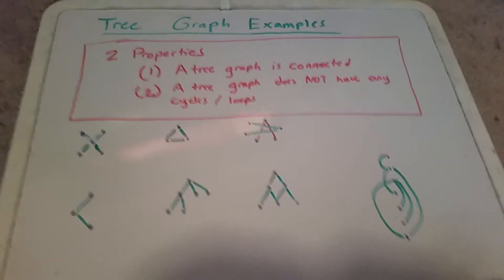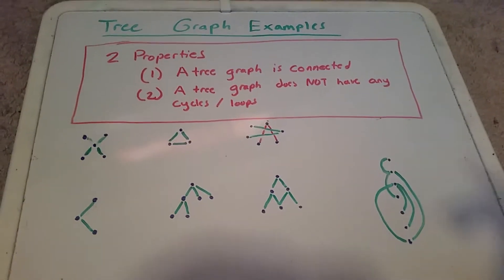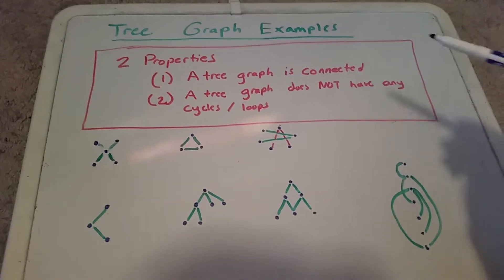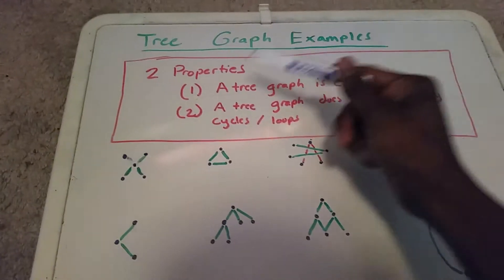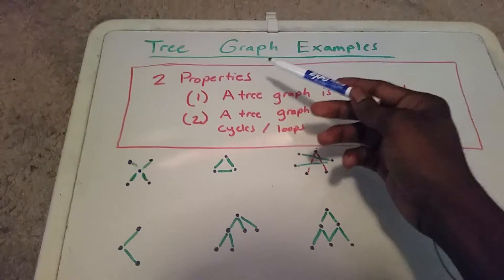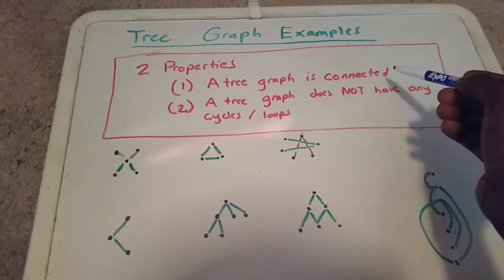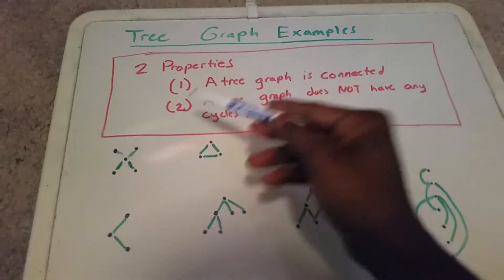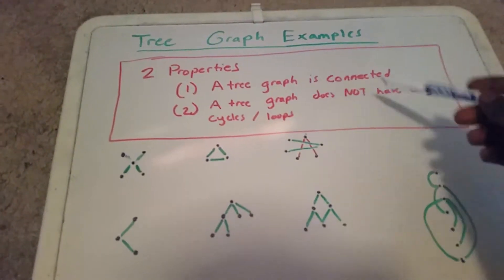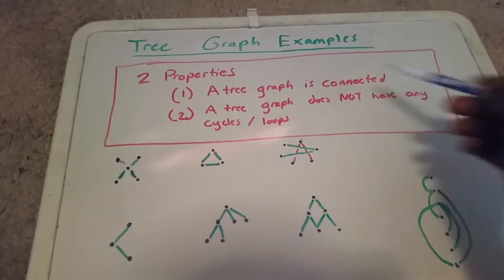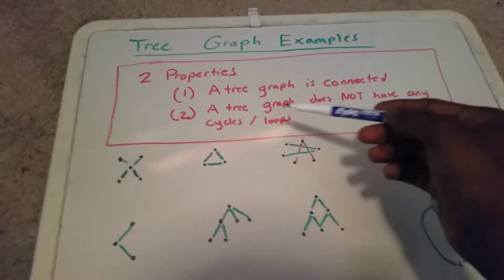Hey guys, this is a video on tree graphs. A tree graph has two properties. One, a tree graph is connected, and two, a tree graph does not have any cycles or loops.